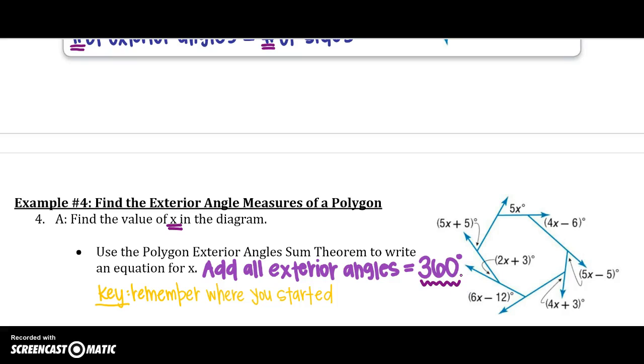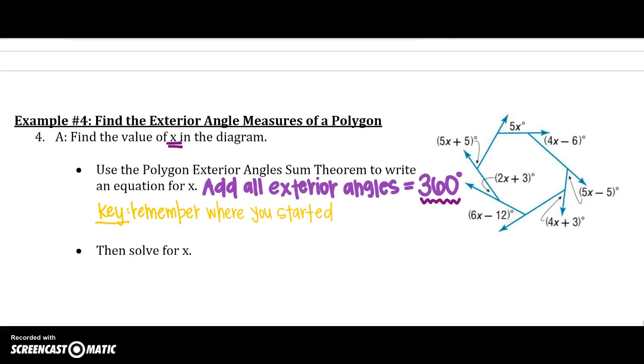And remember where you started. Where did you start adding the exterior angle? That is super important because you don't want to add one exterior angle twice. So how do we do that? Well, we know there are 7 sides, which means we are going to add together 7 exterior angles. And we know that those are always going to equal 360 degrees.